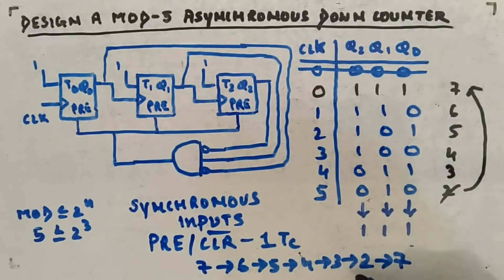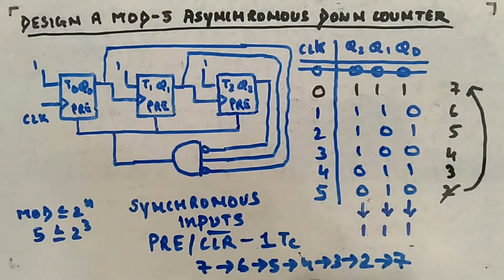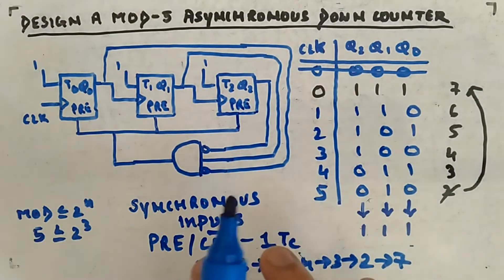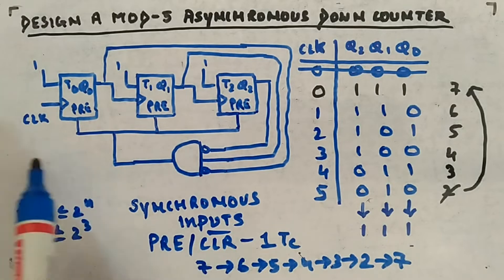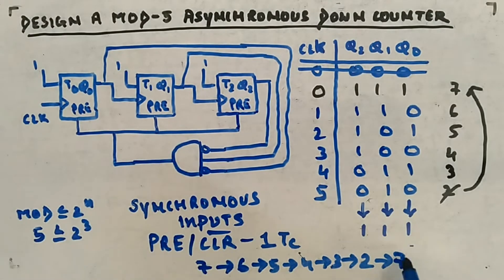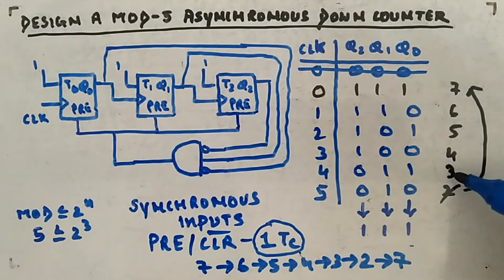So one more extra cycle is taken. What was happening in the asynchronous case: as soon as it reaches 2, it goes to 7 almost instantly. But with synchronous input, 2 will be one state, and then 7 will come. Generally you don't see synchronous inputs — you will usually see asynchronous type only. Just for your knowledge: preset and clear can also be used as synchronous inputs, synchronized to your clock — the state changes only on the next clock edge.